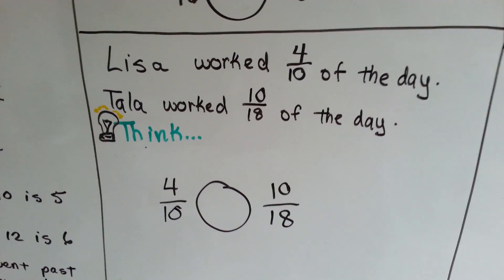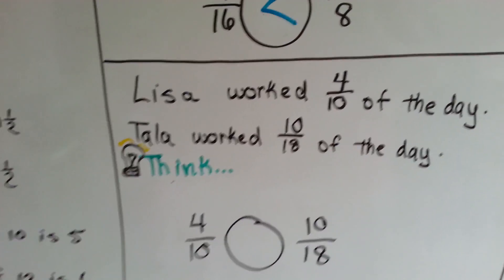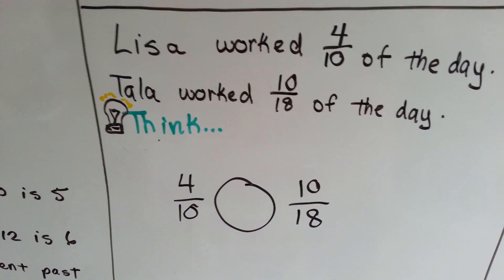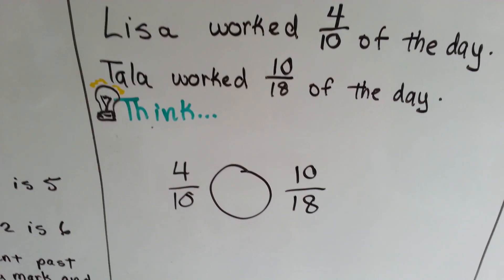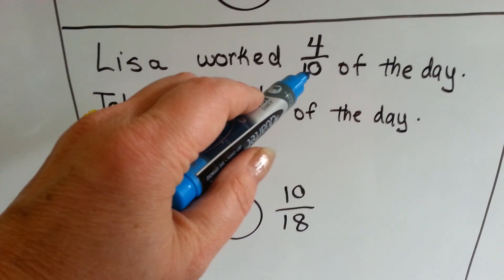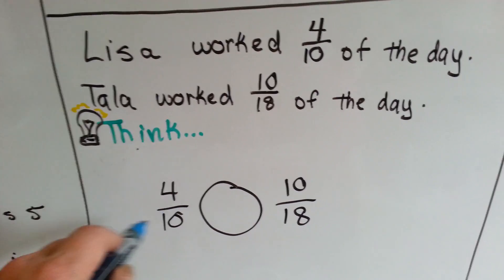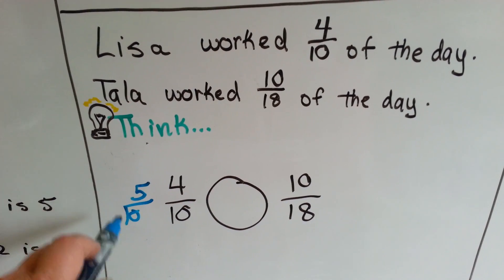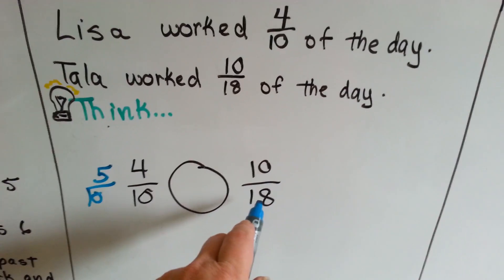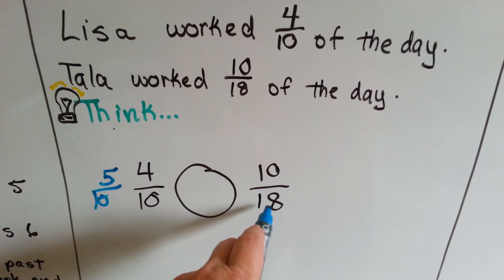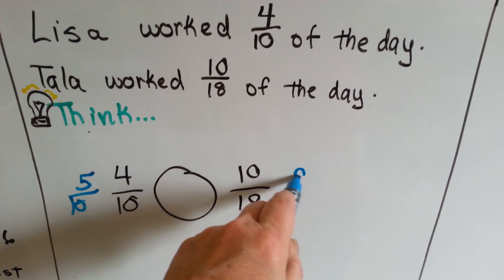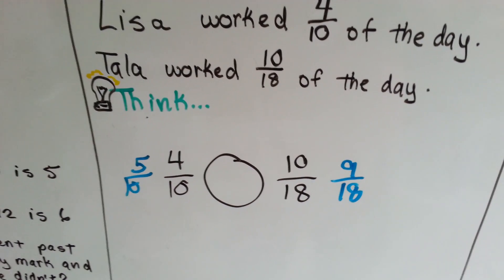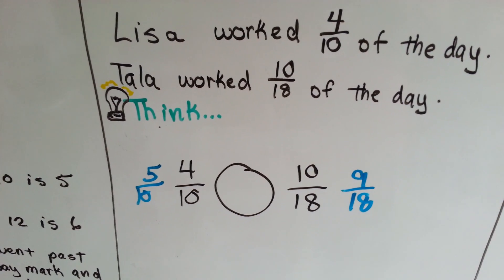Take a look at this one. Lisa worked 4 tenths of the day. Tala worked 10 eighteenths of the day. Who worked longer? Who worked more? What's half of 10? Half of 10 is 5. So Lisa would have had to have worked 5 tenths of the day to work half the day. What's half of 18? What plus what makes 18? 9. So half of 18 is 9. 9 eighteenths would be half the day.